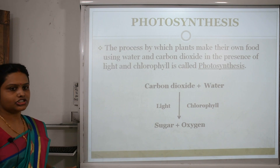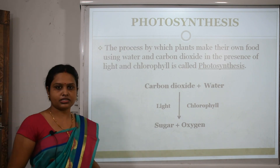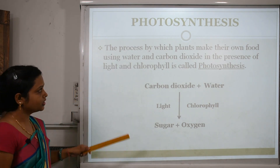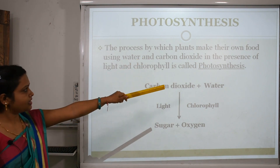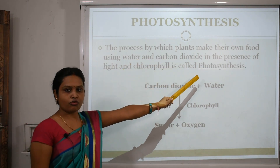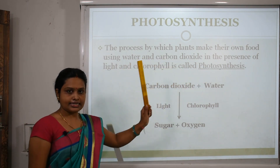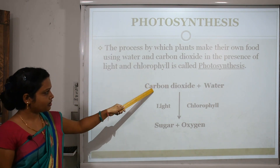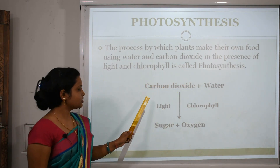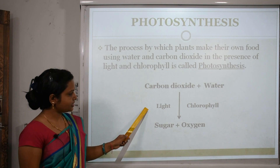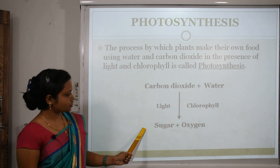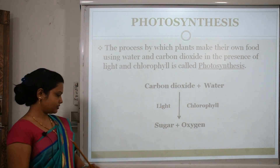The process by which green plants make their own food using water and carbon dioxide in the presence of light and chlorophyll is called photosynthesis. The reaction is: carbon dioxide plus water, in the presence of light and chlorophyll, produces sugar and oxygen.